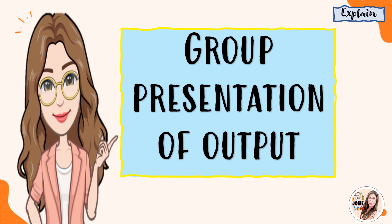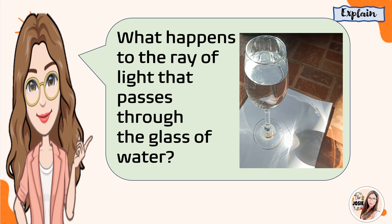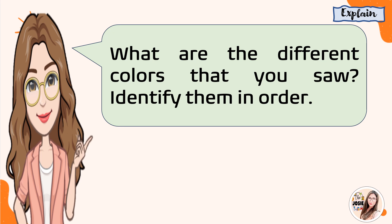And now, let's have your group presentation. Based on your group activity or visual clip, what happens to the ray of light that passes through the glass of water? You can notice that they have different colors. What are the different colors that you saw? Can you identify them in order? You saw the colors of the rainbow, which is red, orange, yellow, green, blue, indigo, and violet — or we call it the ROYGBIV colors.